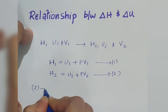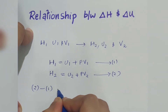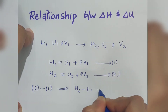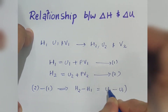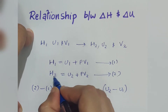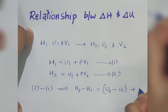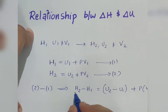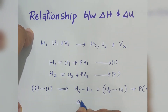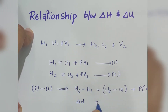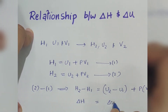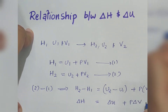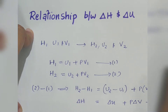Subtracting equation 1 from equation 2, we get H2 minus H1 is equal to U2 minus U1 plus P times (V2 minus V1). This means delta H is equal to delta U plus P delta V. This is equation number 3.